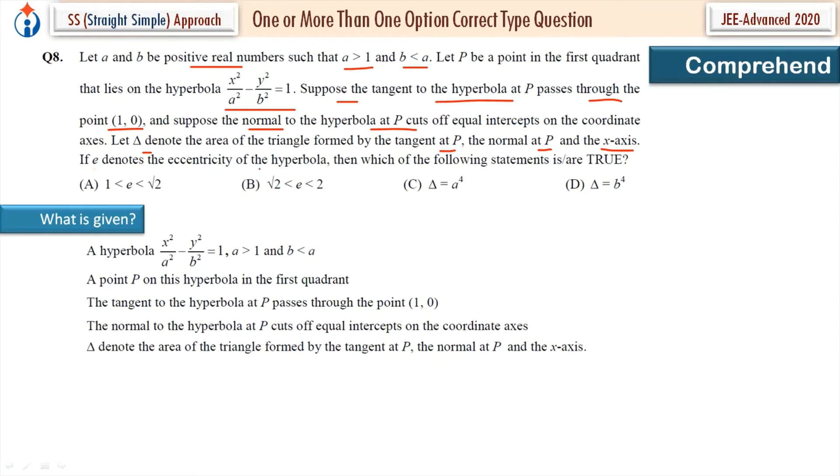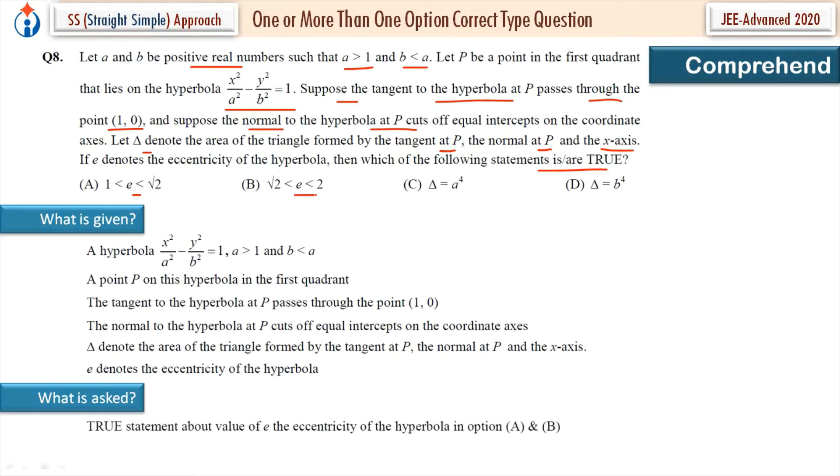Now if E denotes the eccentricity of the hyperbola, E is the eccentricity of the hyperbola. And what is asked? Which of the following statements is or are true? So in option A and B, the value of E, where does it lie? And in option C and D, two statements about the area of the triangle.